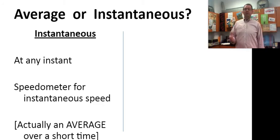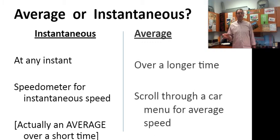Instantaneous is, well, it's the velocity or the acceleration at a particular instant in time. And for your speed, that would be your speedometer reading. It's the one you're most familiar with. It's actually, technically, the average over a very short time. And the average is, of course, generally over a longer time than the instantaneous.